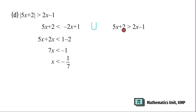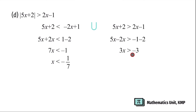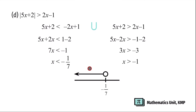For the second inequality, 5x plus 2 greater than 2x minus 1. Bring 2x to the left to get 5x minus 2x, and bring 2 to the right to get negative 1 minus 2, which is negative 3. So 3x is greater than negative 3. Dividing both sides by 3, x is greater than negative 1. With the aid of the number line, finding the union: x less than negative 1 over 7 uses an open circle and left-side arrow; x greater than negative 1 uses an open circle and right-side arrow. The union of these two covers the entire number line, so the solution is the set of real numbers.